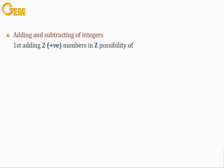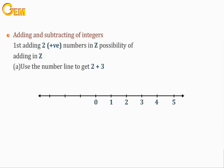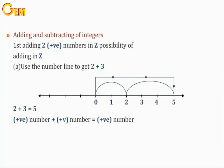Adding two positive numbers in Z. Using the number line to get 2 plus 3: take two steps from 0, then move another three steps to the right side. The answer will be 5. A positive number plus a positive number is a positive number.